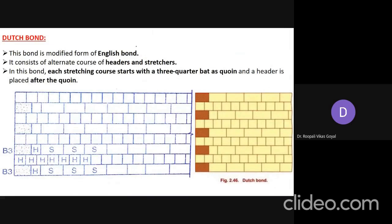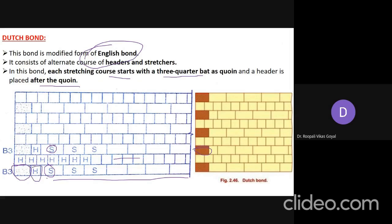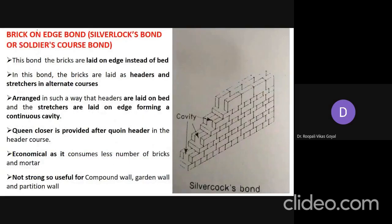Dutch bond is the modified form of English bond. In this bond, each stretcher course starts with a three-quarter bat at the corner coin, and a header is placed next to this coin. Then stretcher courses follow, with the next course having all headers. By slightly varying the stretcher-header arrangement using bats and closers, this different bond is created.